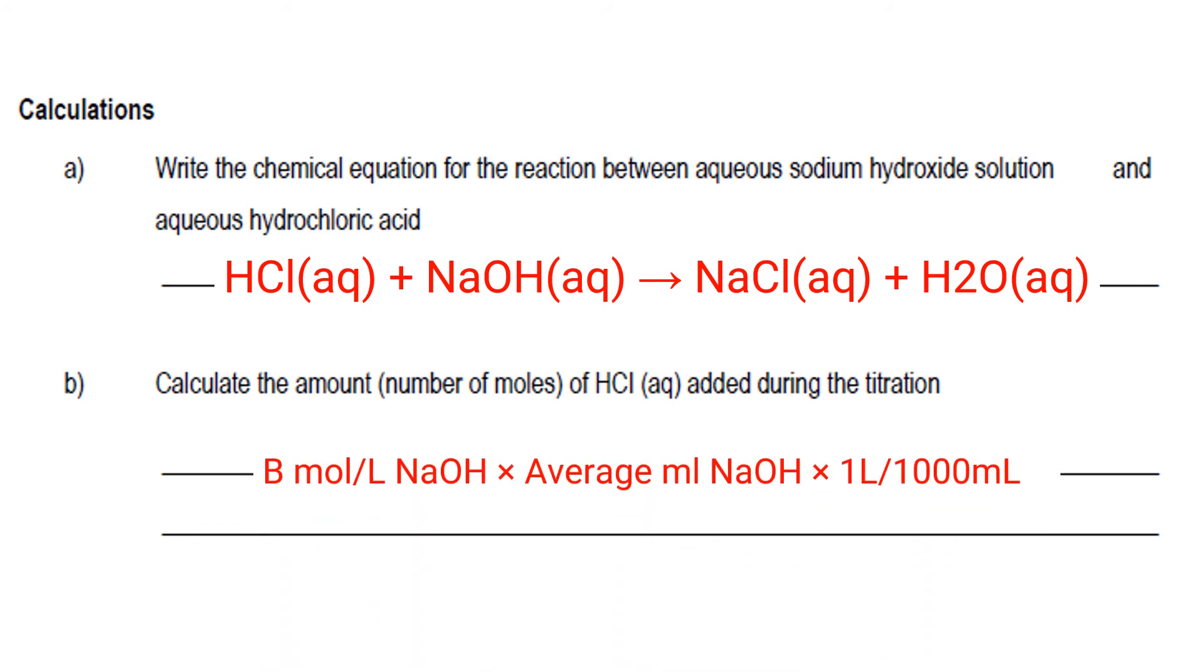Calculate the amount or number of moles of HCl added during the titration. In this case, they ask you to calculate the amount of HCl. You must multiply the molarity of the sodium hydroxide solution times the average volume which we found out from the readings you took during that titration, then times it by 1 liter over 1000 ml which will give you the number of moles of HCl. This here is the value which you must calculate from the stock solution. The average milliliter NaOH is the value we got from the experiment.